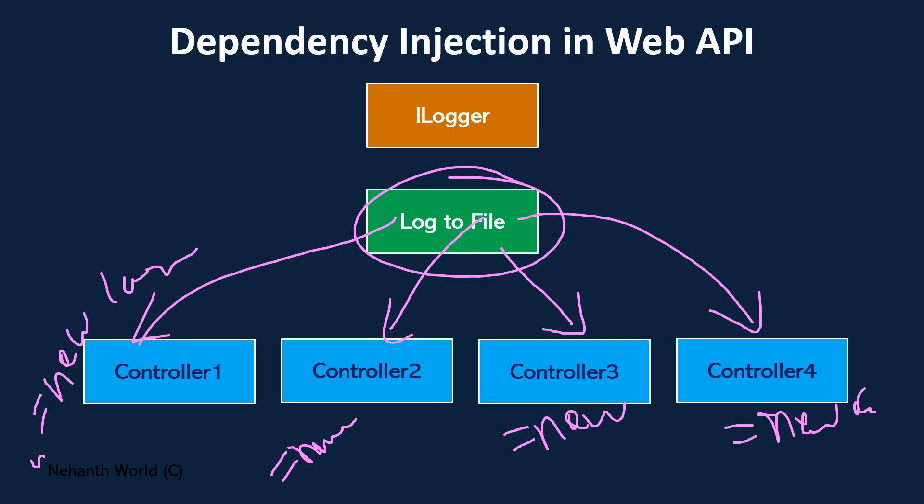When we consume a class inside another class by creating an object inside that class, that is nothing but strongly coupled, or tightly coupled. In this case we want to use the log class, so we need to create an object for it in every controller. With one logging mechanism, we are creating an instance in every controller — 50 instances for 50 controllers, 100 for 100 — when really just one instance should be enough.